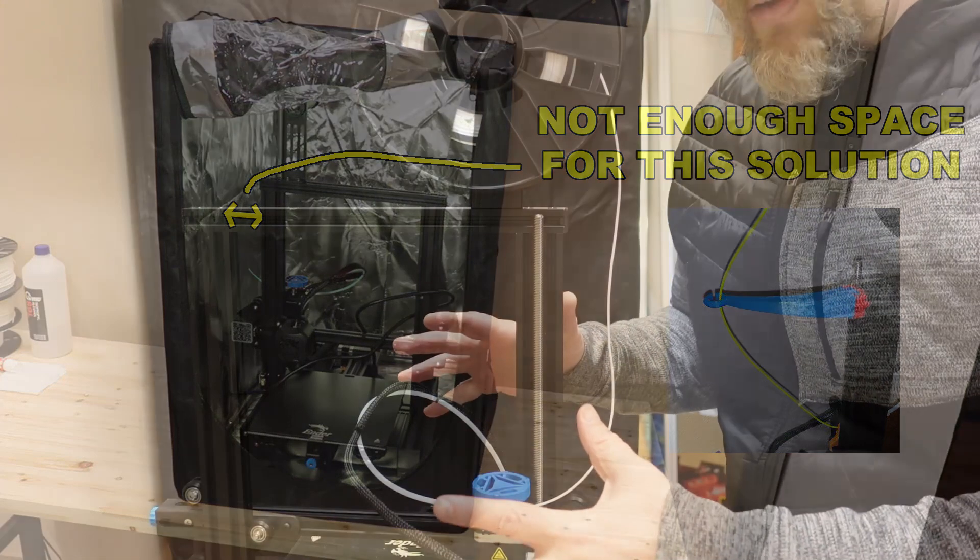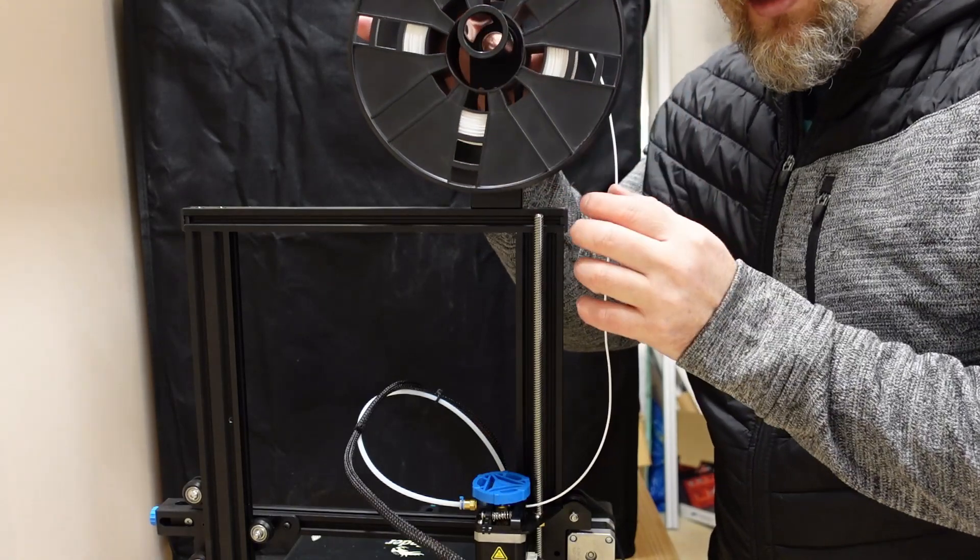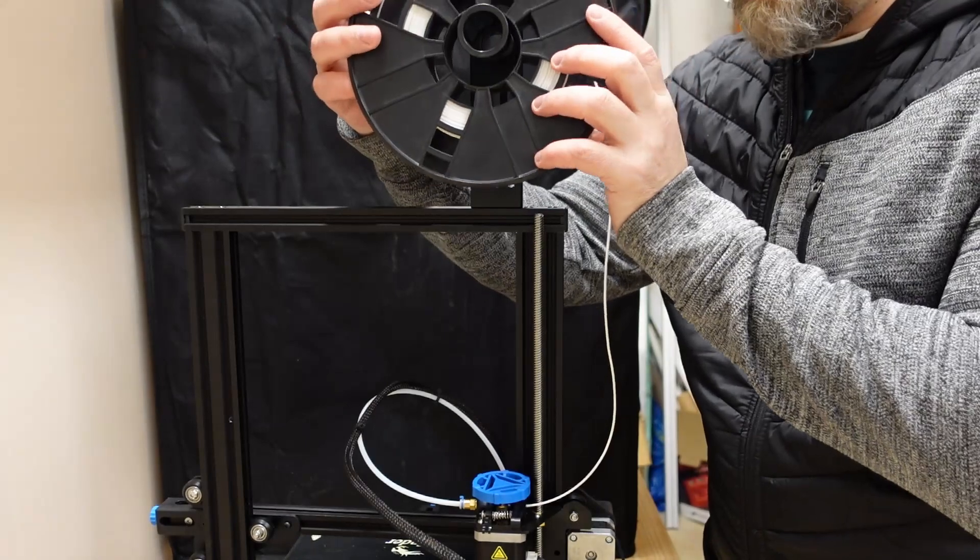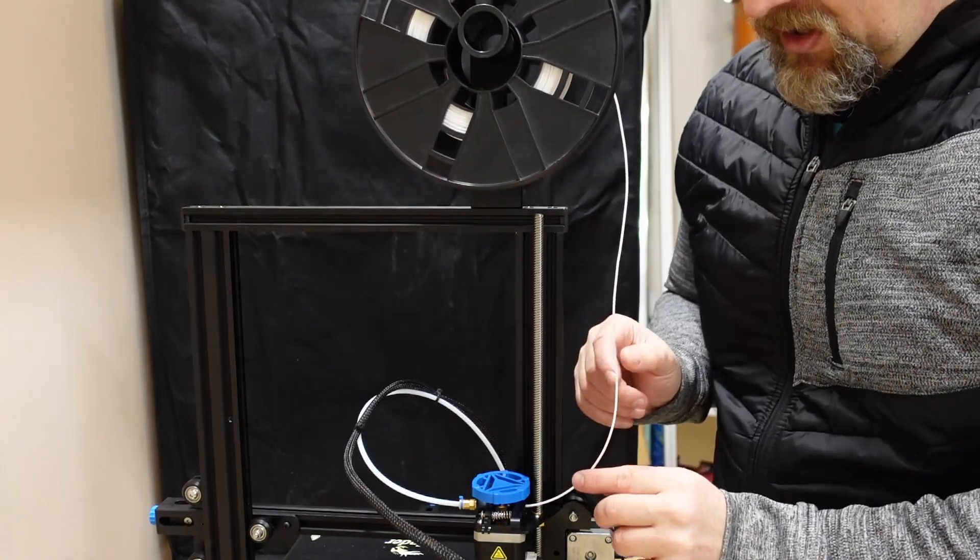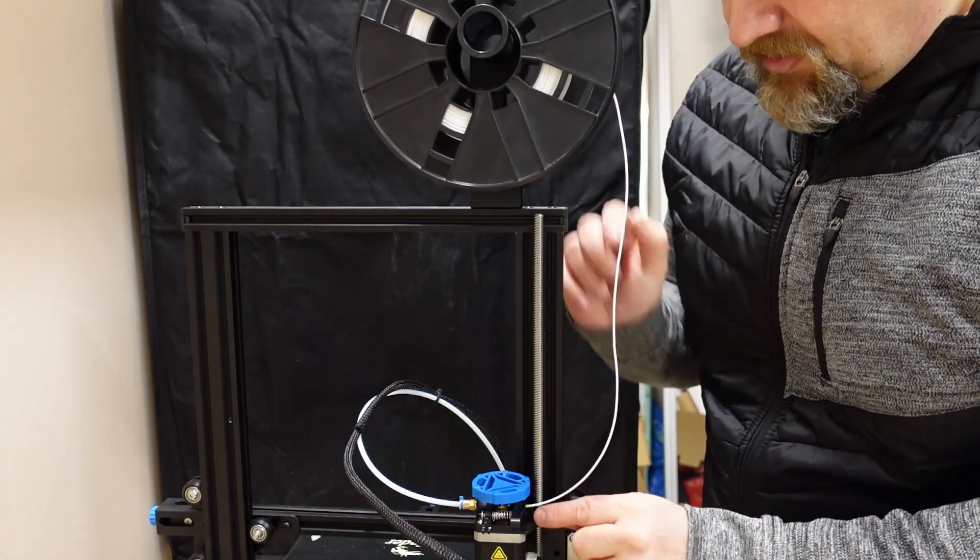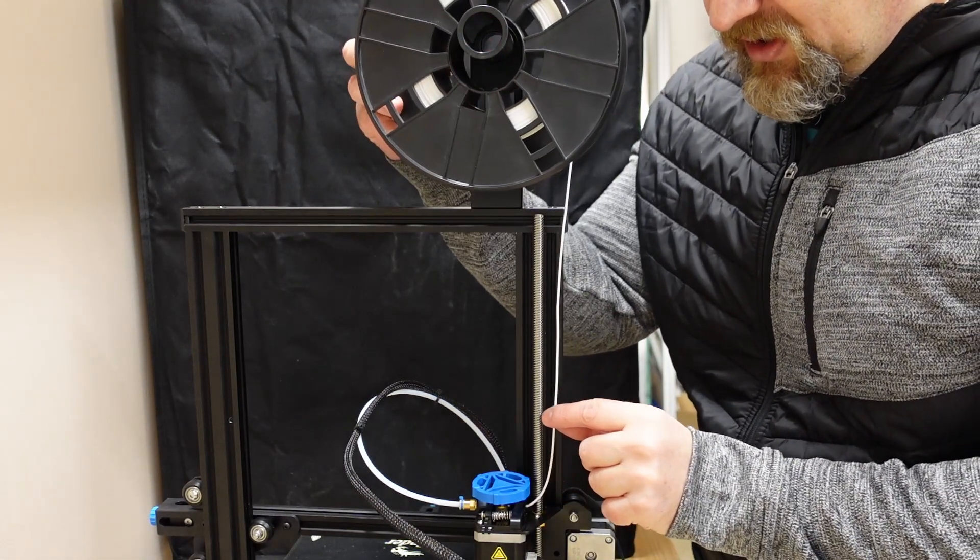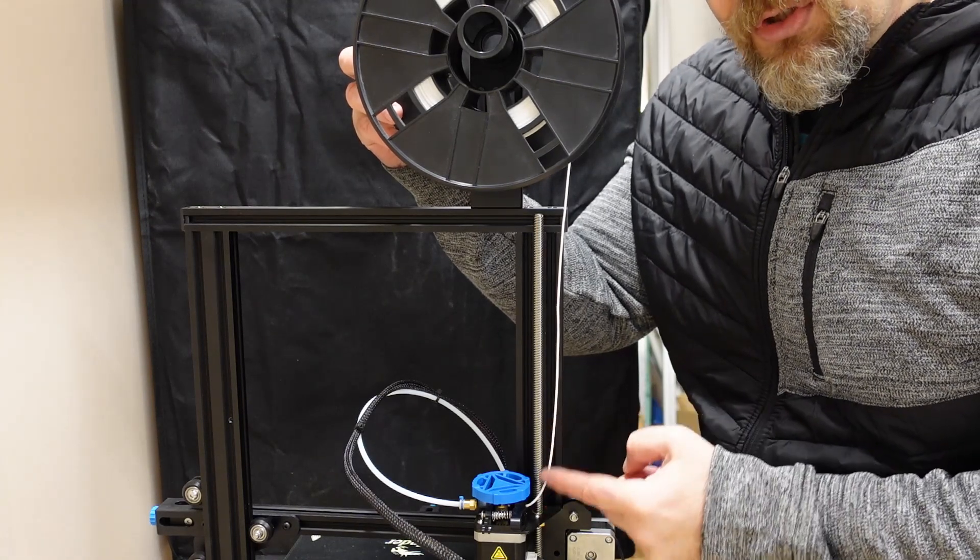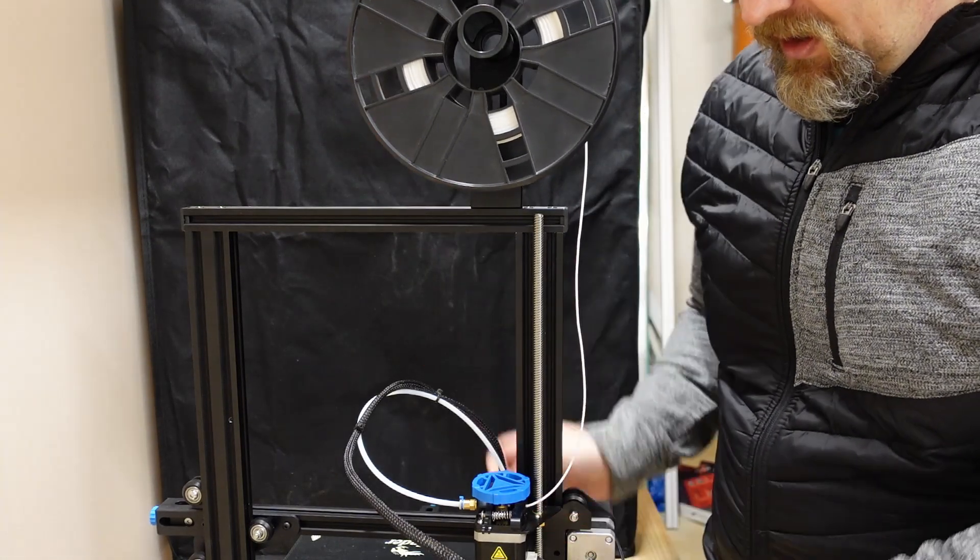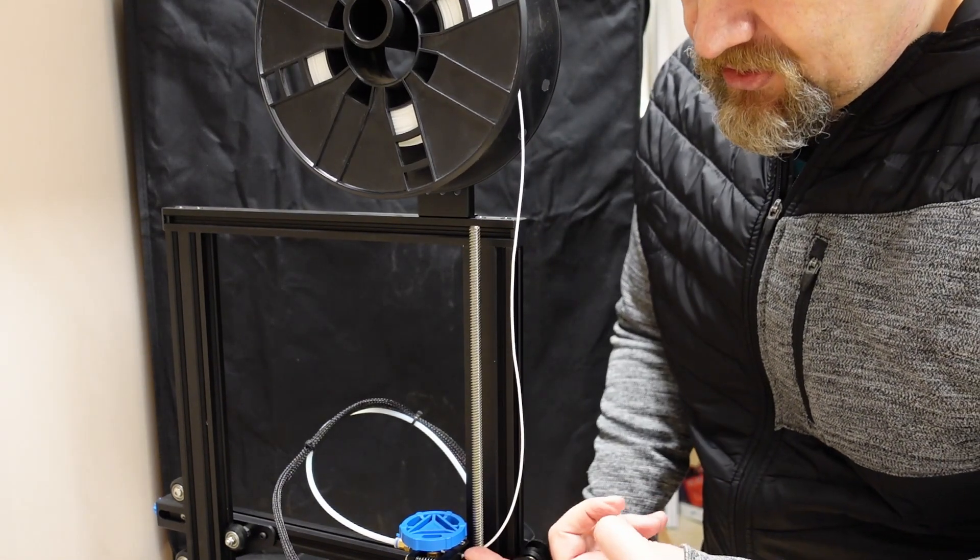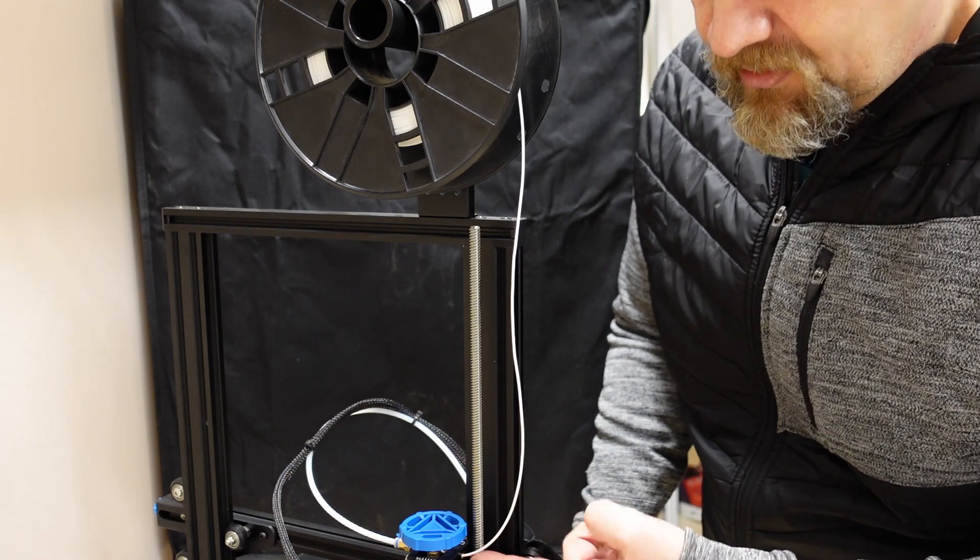Now this is the backside of the printer. Here is the spool and especially when there is not much filament on the spool, the diameter is smaller and here it goes to the extruder. I hope it's visible on camera and if there is some tension, this angle is very big, very sharp and the filament will create more friction and the filament may rip here on the edge of the extruder.